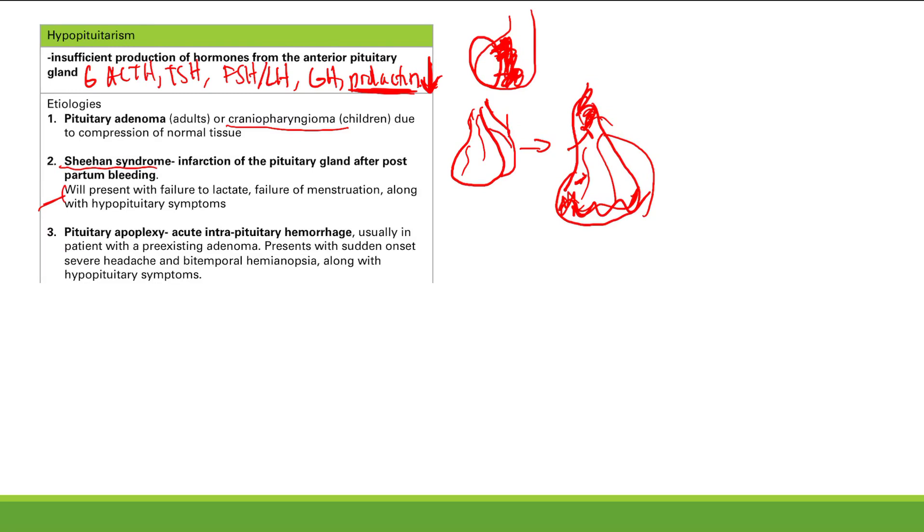Next is pituitary apoplexy. What is pituitary apoplexy? This is an acute intrapituitary hemorrhage. Let's draw it again. So we have an adenoma here. Remember, a tumor is always more vascular. So this patient is going to get an acute hemorrhage within the pituitary gland.